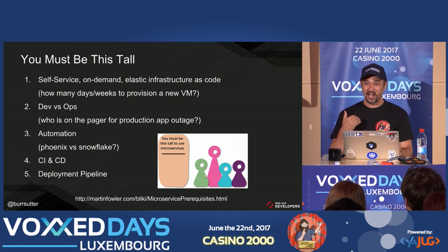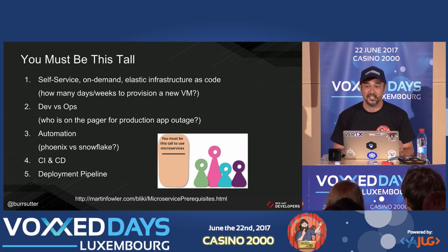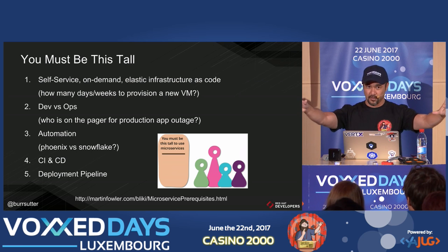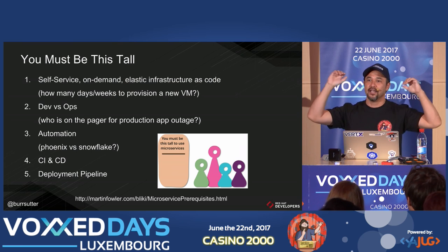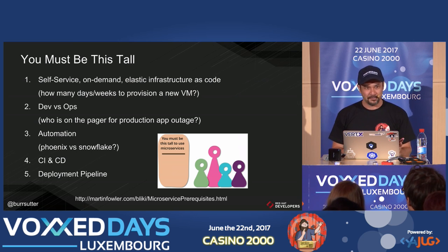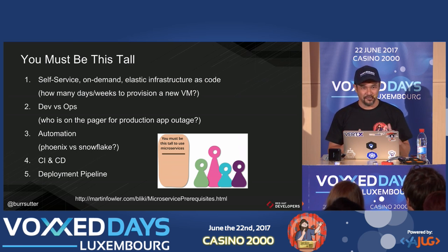If it takes a programmer — an expensive resource — three weeks to wait on an inexpensive virtual machine, that sends a signal. It's like waiting for a pencil so I can write. Self-service and on-demand is critical. If you can't get a new VM provisioned within two to five minutes, your organization has a problem — it's technically very doable today. It's an organizational problem, not a technical problem. You also have to think in terms of DevOps — it's no longer developers versus operators.